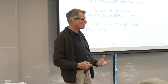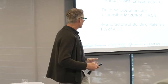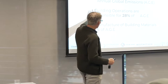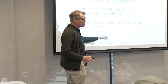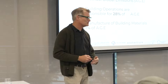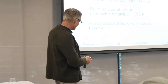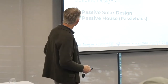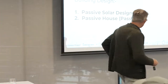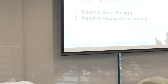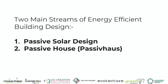So if you look at how we use our buildings, it's around 30% of the world's emissions, which is just such a large number. There are two main streams for designing an energy efficient building or home: passive solar design and passive house. We're going to unpack those today.